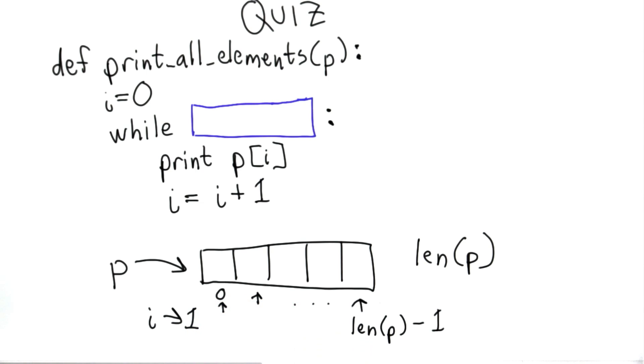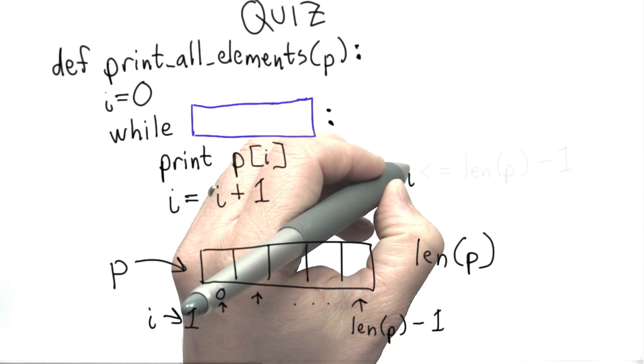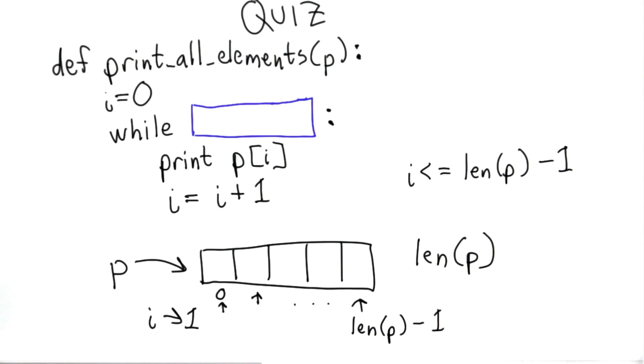So we want the test condition of the loop to make sure that i has not exceeded that last index. We could write that condition many different ways. One way would be to use i is less than or equal to len(p) minus 1.